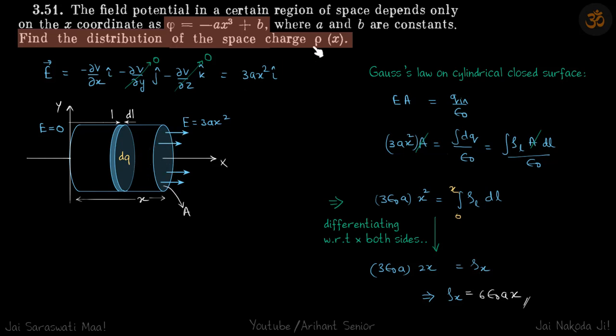We need a volume element here, so we have taken a cylindrical volume element at a distance x, so electric field there will be 3ax².